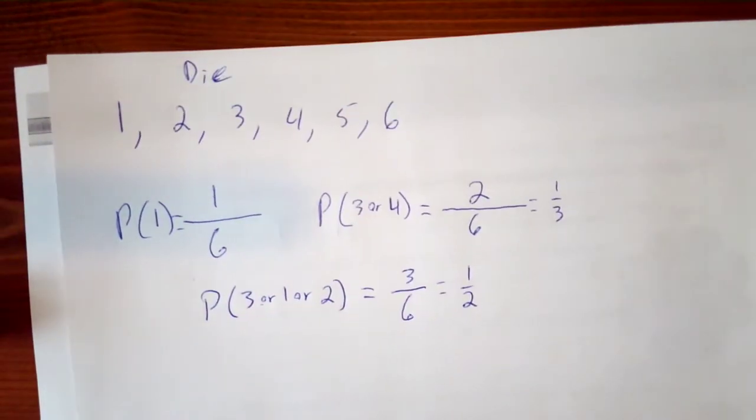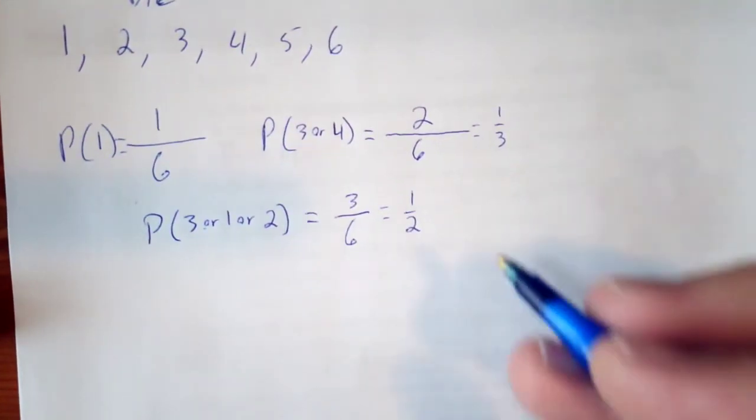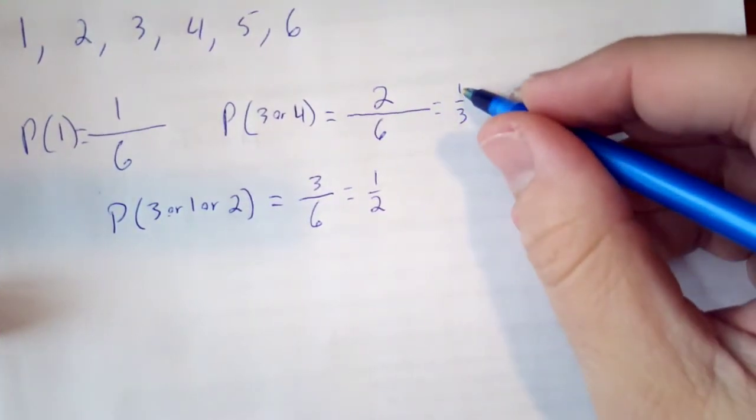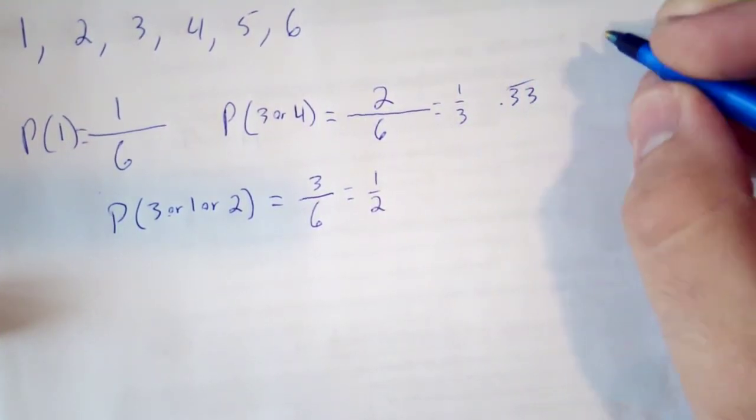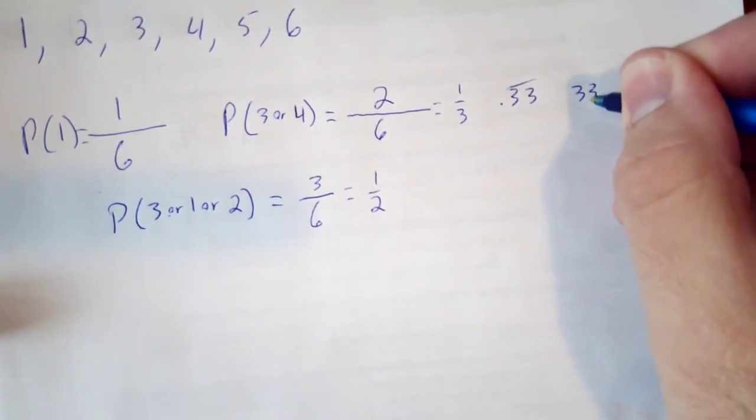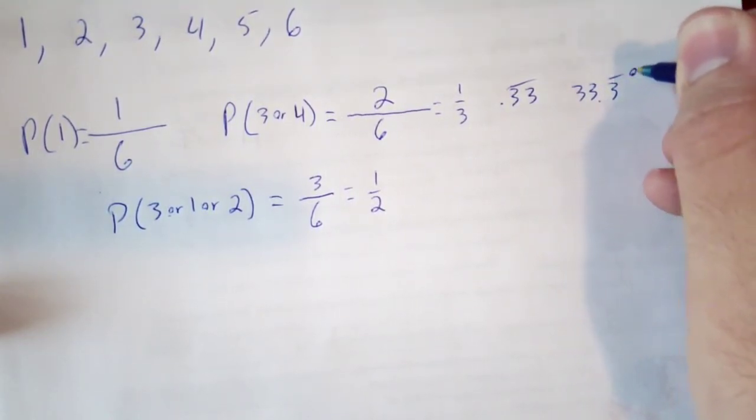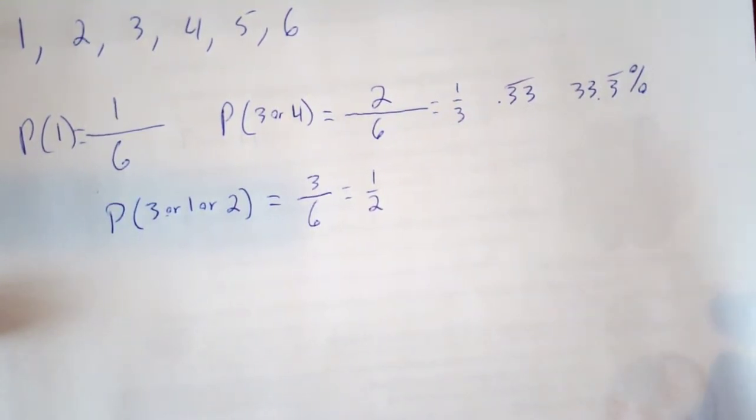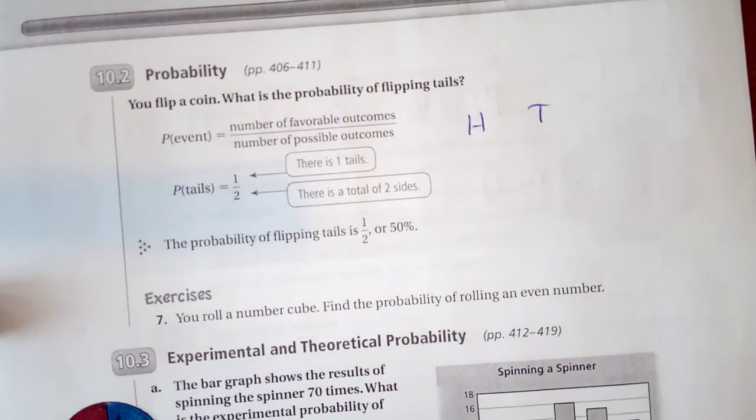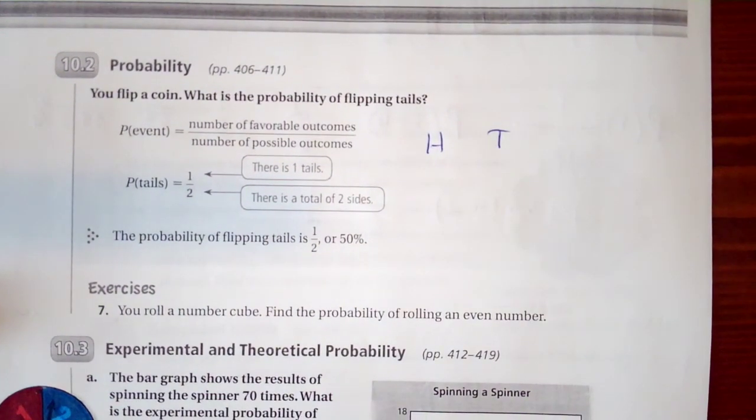You can put any of these into a decimal form, such as one-third is equal to 0.33 repeating or 33.3 repeating percent. So any way you want to write these is an acceptable way. So that would be probability, very basic.